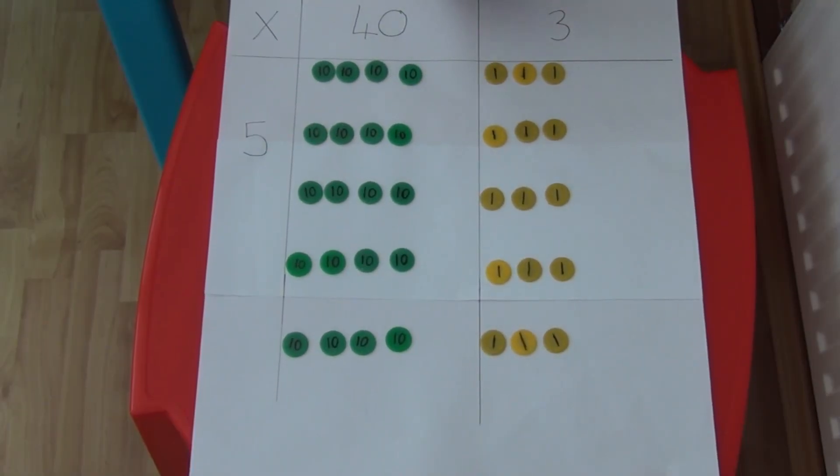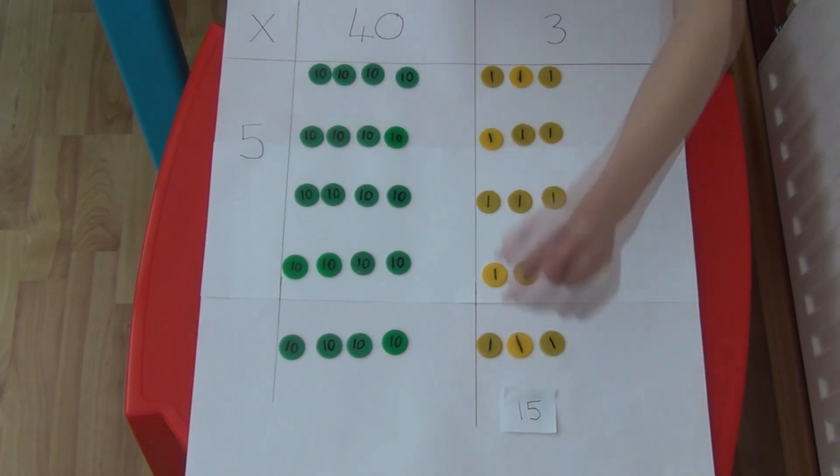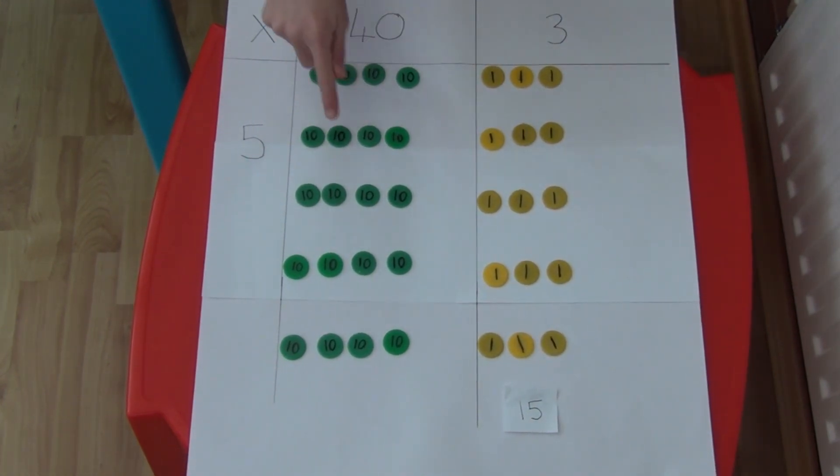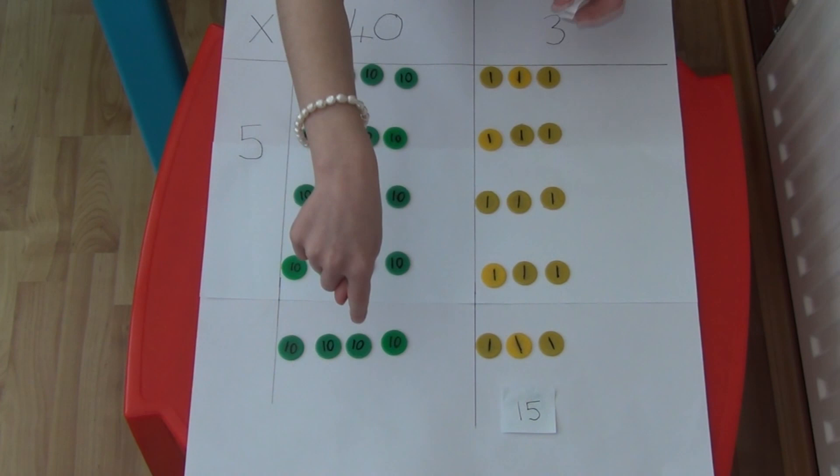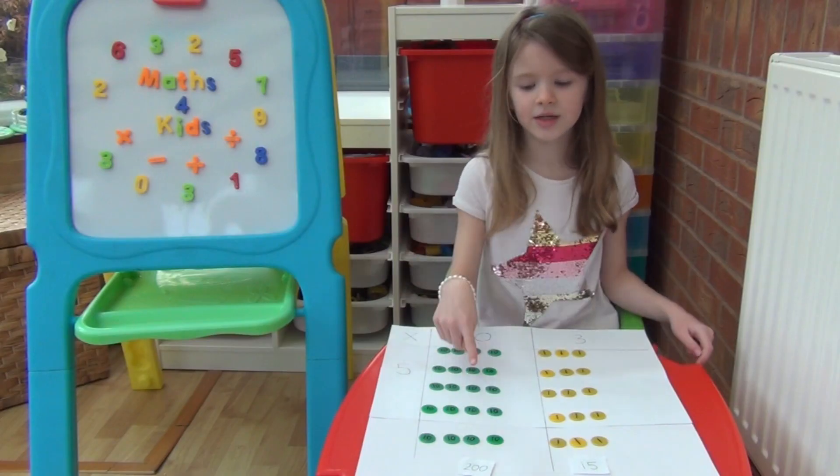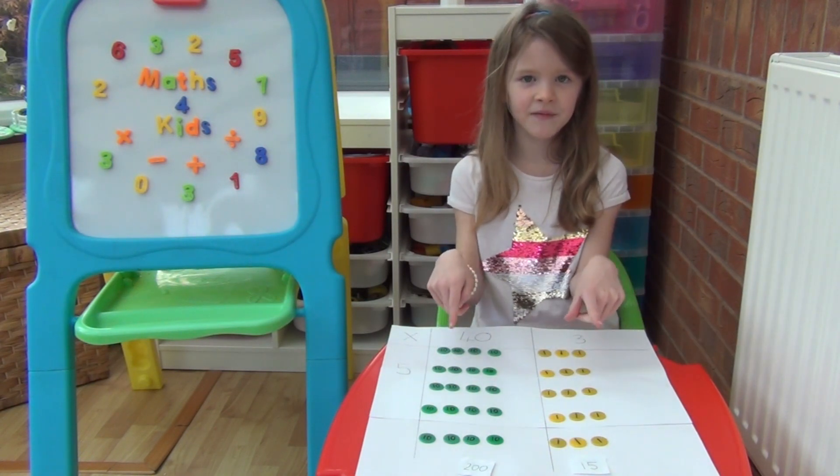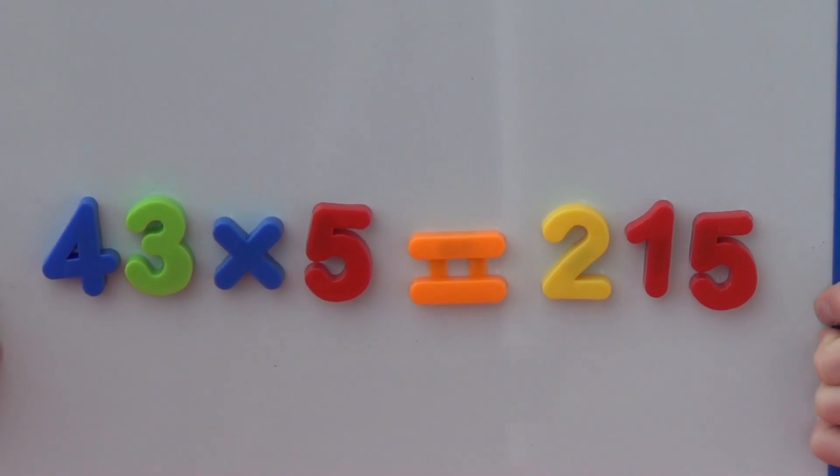This time I have 3, 6, 9, 12, 15 1s and 4, 8, 12, 16, 20 10s which is 200. 200 add the 15 1s equals 215. So 43 times 5 equals 215.